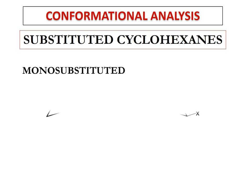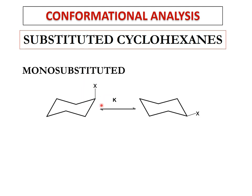If we have a substituent on this cyclohexane ring, you know that it could be axially oriented or it could be equatorially oriented. A cyclohexane ring has 12 hydrogens attached to it and they could be divided into axial and equatorial hydrogens. So if we have a substituent X that has replaced one of the hydrogens, it could have replaced an axial hydrogen or an equatorial hydrogen, meaning that X could be axially or equatorially oriented.